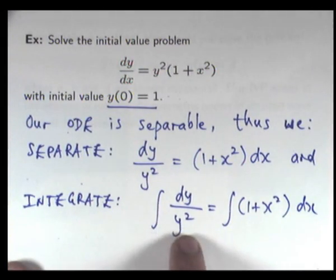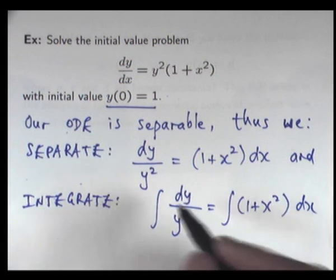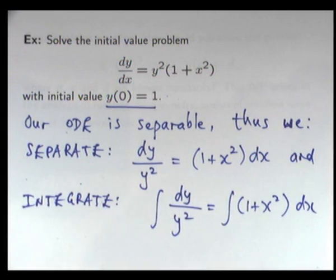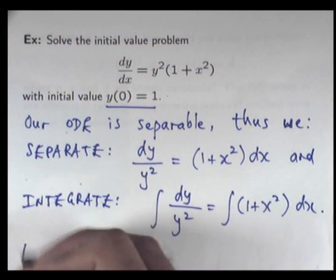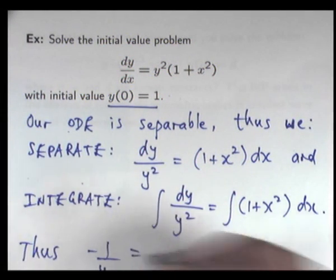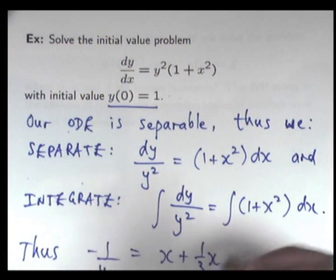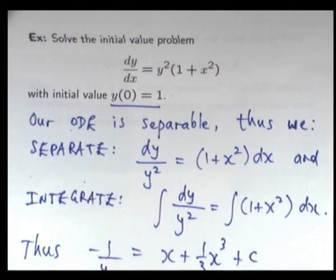Now, note here I'm integrating with respect to y. Over here, I'm integrating with respect to x. Now, on the left-hand side, I'm going to get something like minus one on y. And on the right-hand side, I'm going to get x plus a third x cubed plus a constant of integration.